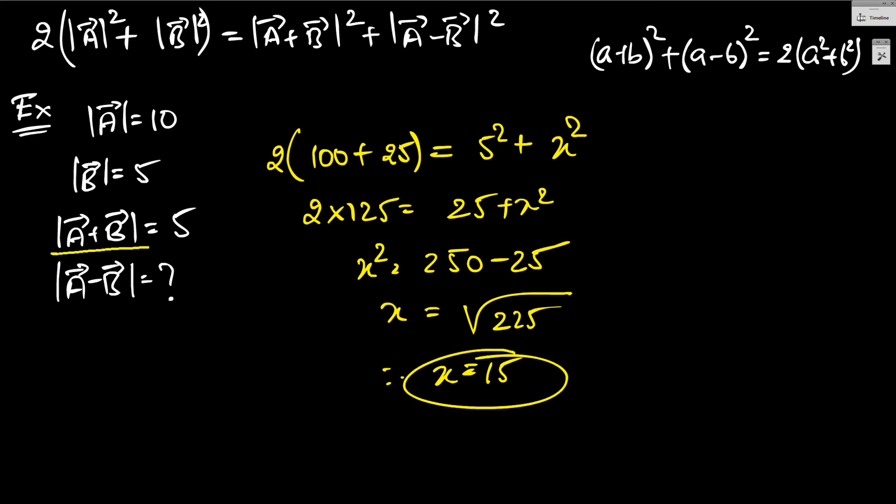Obviously, that makes sense. Look, magnitude of a plus b is 5 units, and that's only possible when they are opposite to each other. The two vectors must have been aligned this way. That's why when you sum them, you get 5. When you subtract, you flip one, and you get 15. That makes sense.